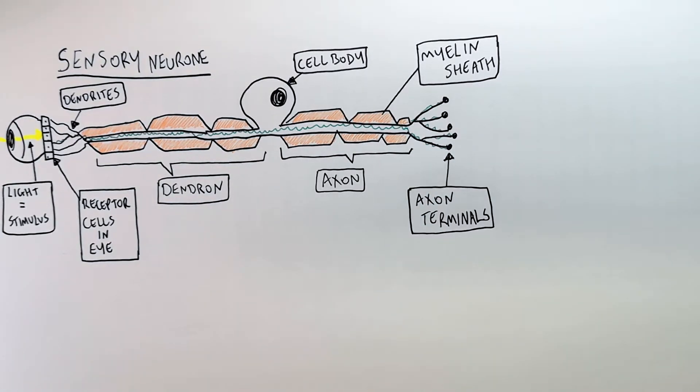So what is the function of the myelin sheath? Well the myelin sheath is a fatty layer that surrounds the neuron and insulates it.